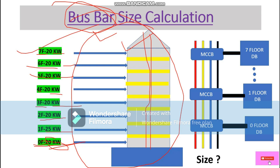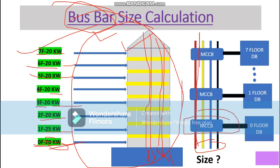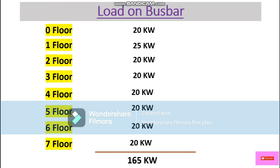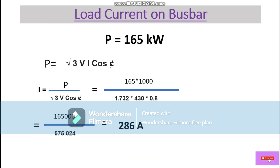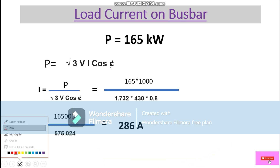The bus bar riser will be installed with four bus bars: R, Y, B, and one neutral. In each floor we have an MCCB or tap-off box to feed power to the floor panel. Now let's calculate the connected load. Summing all the floor loads gives us 165 kW as the total connected load on the bus bar.